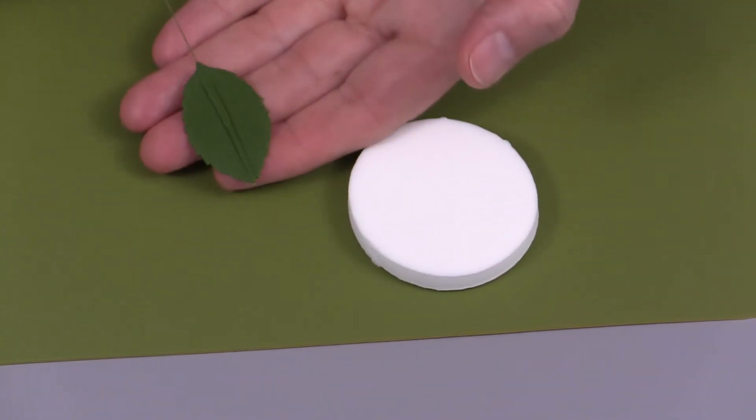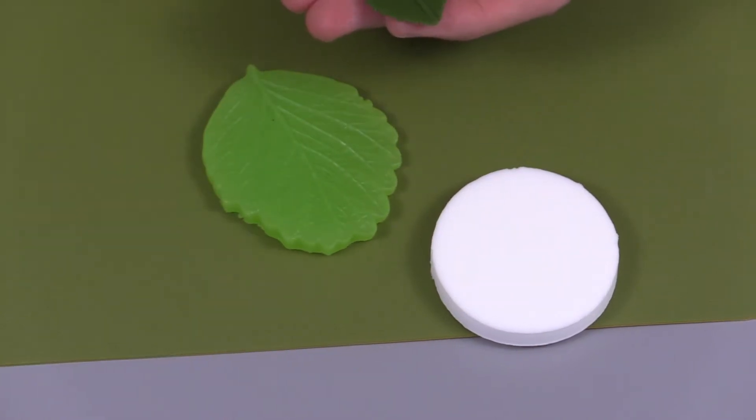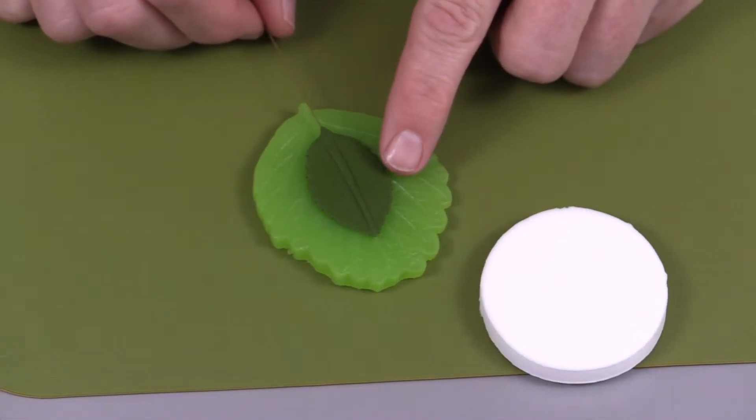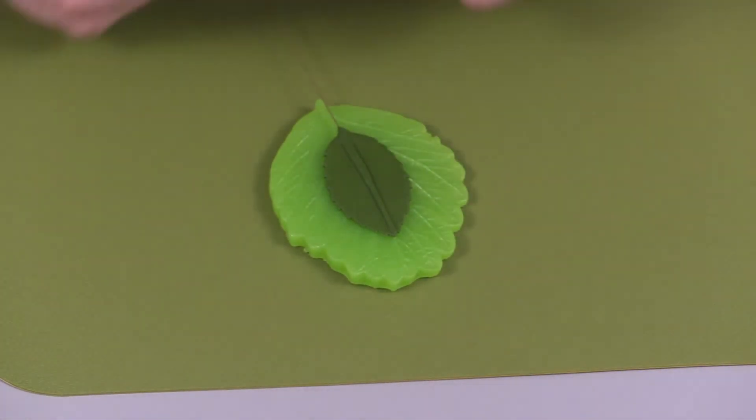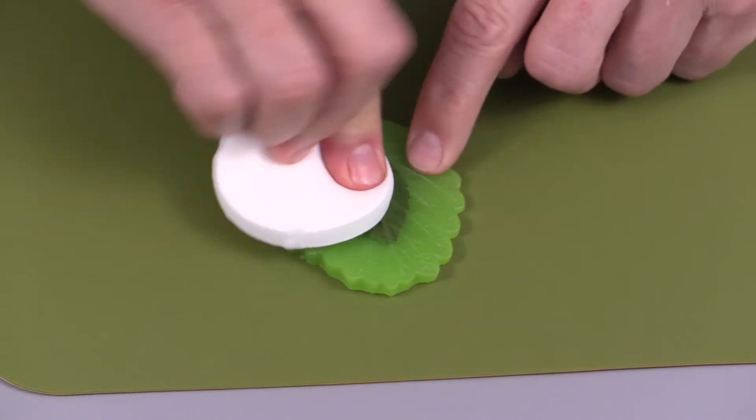So for something like a rose leaf, we use a single-sided vein here. This is the fine rose leaf vein. You would place your leaf on the top with the ridge side up and then using the round sponge, you're just going to press onto the top of this with the round sponge.